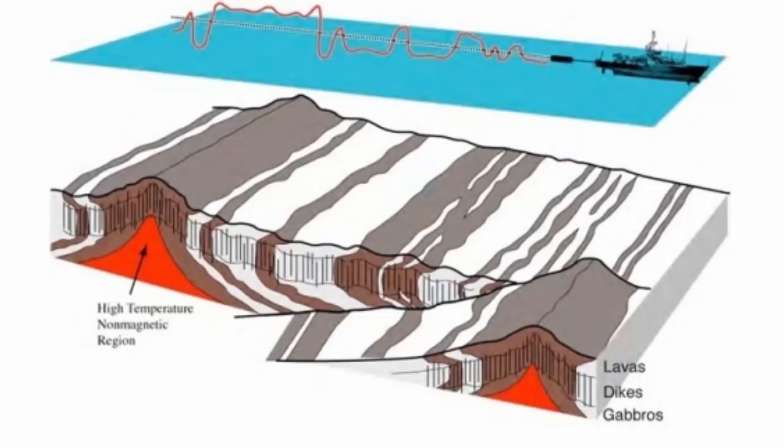Where the magnet picked up positive anomalies, they registered magnetic fields that were aligned with the present magnetic field, which we call normal polarity, and thus boosted that field making it stronger. Where the magnet picked up negative anomalies, the pillow basalt magnetites were aligned in the opposite direction, reversed polarity, and were subtracting from the strength of the current field.